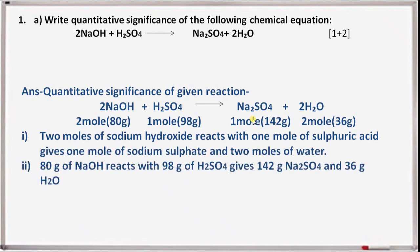Quantitative significance of the given chemical reaction: 2NaOH + H2SO4 gives Na2SO4 + 2H2O. 2 moles of sodium hydroxide equals 80 grams. 1 mole of sulfuric acid equals 98 grams. 1 mole of sodium sulfate equals 142 grams. 2 moles of water equals 36 grams.